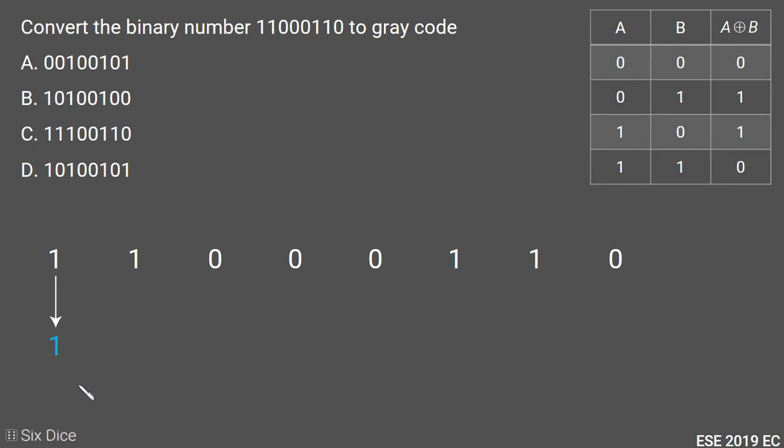Then we will copy our most significant digit of our given binary number to our gray code. Then we will perform XOR of first and second digit of our given binary number.